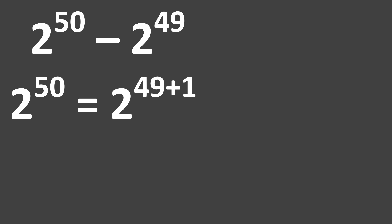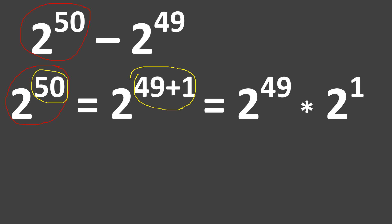What we will simply do is break down 2 raised to the power of 50. We will break it down into 2 raised to the power of 49 plus 1. So we know that 50 is the same as 49 plus 1. Therefore, 2 raised to the power of 50 is the same as 2 raised to the power of 49 plus 1, which we can further break down as 2 raised to the power of 49 times 2 raised to the power of 1.